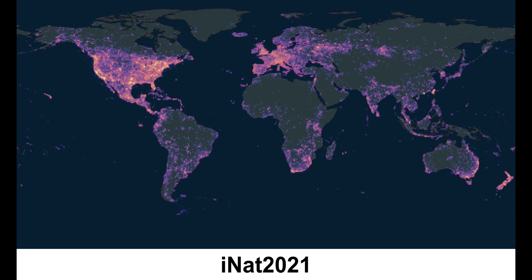Unlike previous years, every image in the 2021 dataset comes with location and time information so that competitors can explore how to incorporate these types of metadata into their solutions.